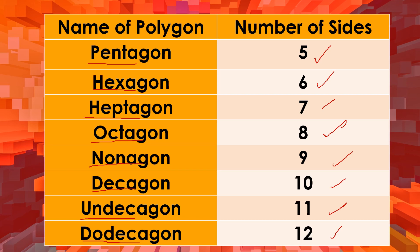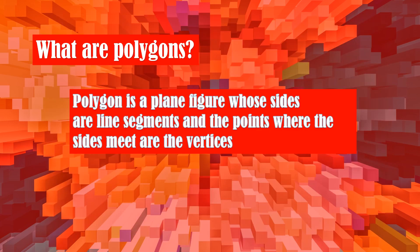Is there any question? Let's proceed. What are polygons? A polygon is a plane figure whose sides are line segments, and the points where the sides meet are called the vertices.